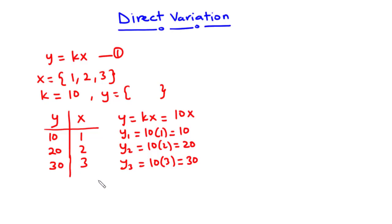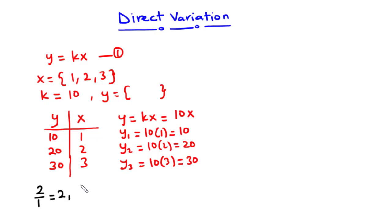What do we notice here? We realize that as the value of x increases, there is a corresponding increase in the y values. Let's focus on x equals 1 and y equals 10. As x increases from 1 to 2, y increases from 10 to 20. Looking at their ratios: 2 divided by 1 equals 2, and 20 divided by 10 equals 2. The increase of both the x and y values are of the same ratio.